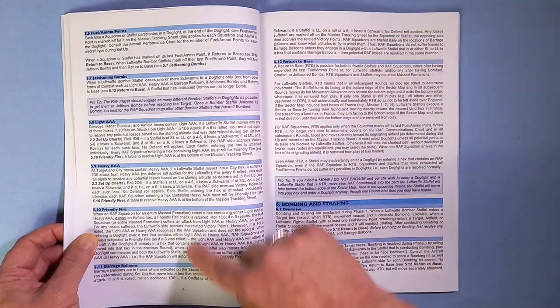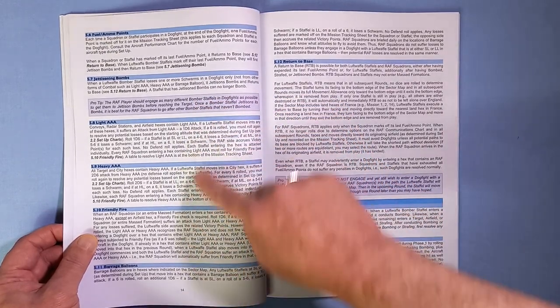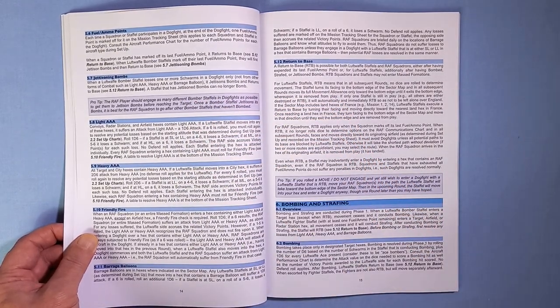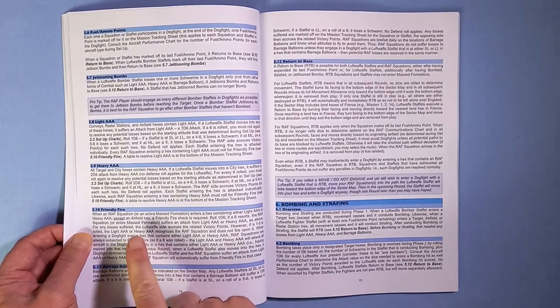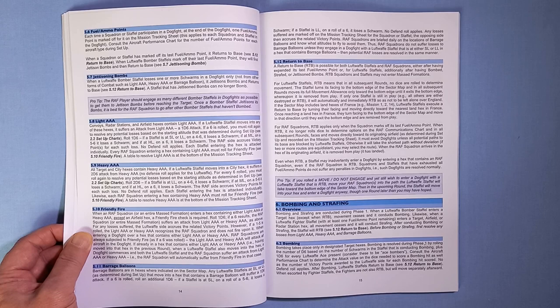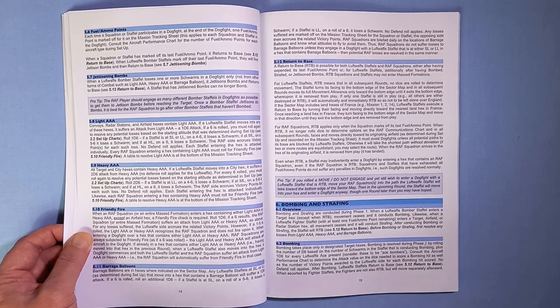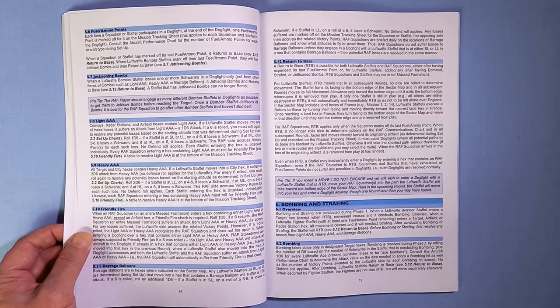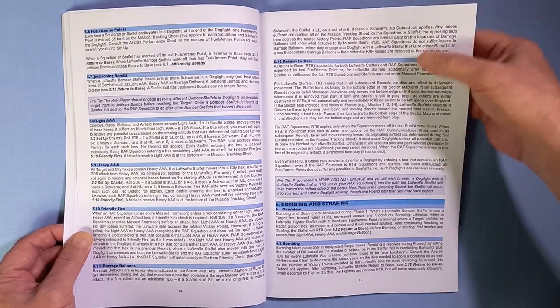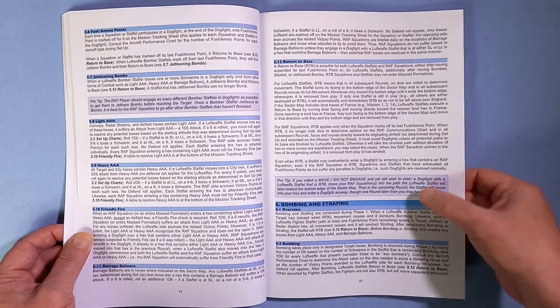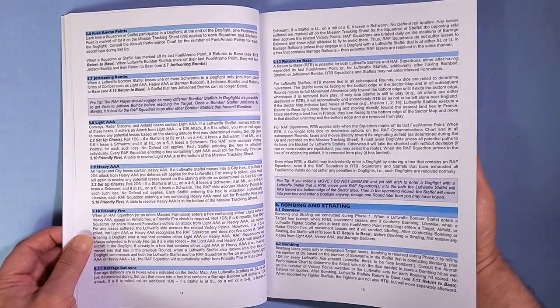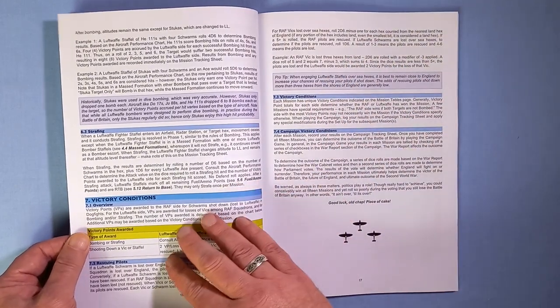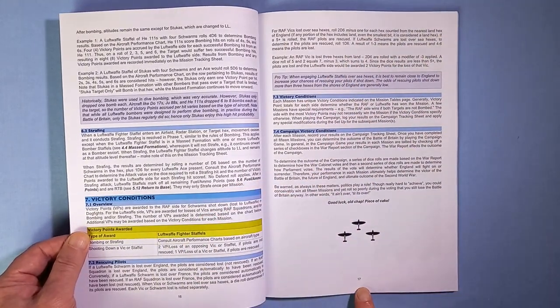The different types of attack that can happen - apart from the aircraft, light AAA, heavy AAA, even friendly fire. When the RAF squadrons fly into hexes that have AAA or indeed barrage balloons. Returning to base for both sides. Bombing and strafing of the Luftwaffe planes. And the victory conditions. And there we are, 17 pages.